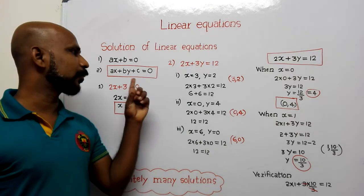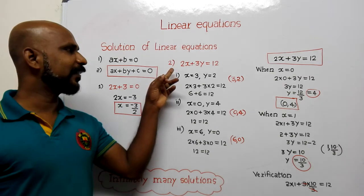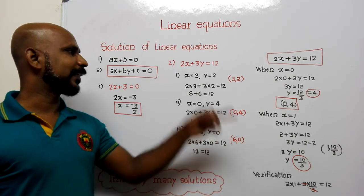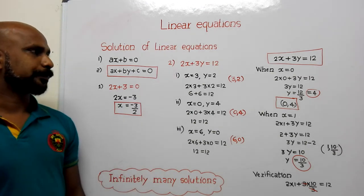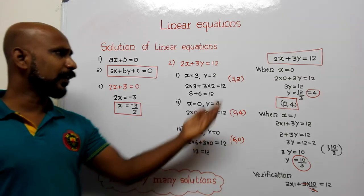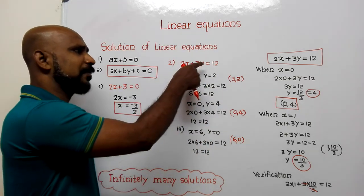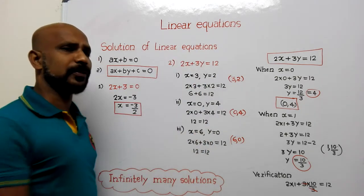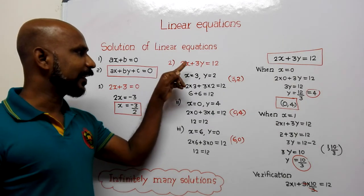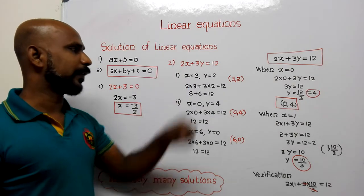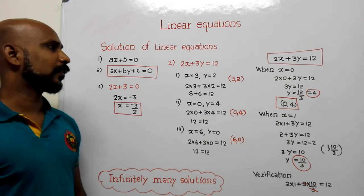Our main topic is linear equations in two variables, so we will move to that. I have written a question here: 2x plus 3y equal to 12. If you want to write it in standard form, that is 2x plus 3y minus 12 equal to zero. This is a linear equation in two variables.